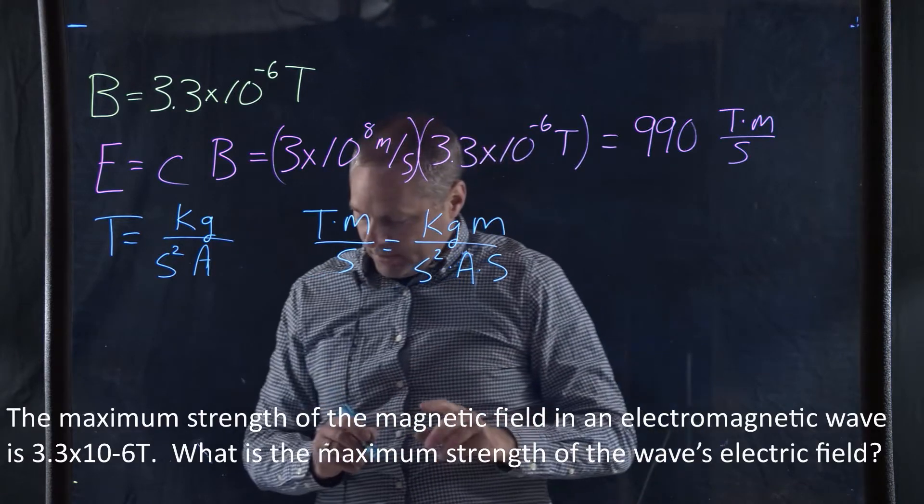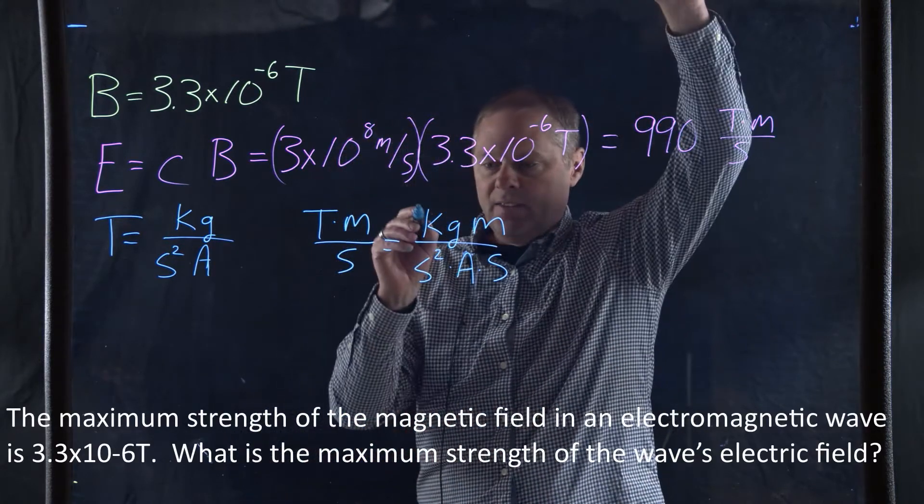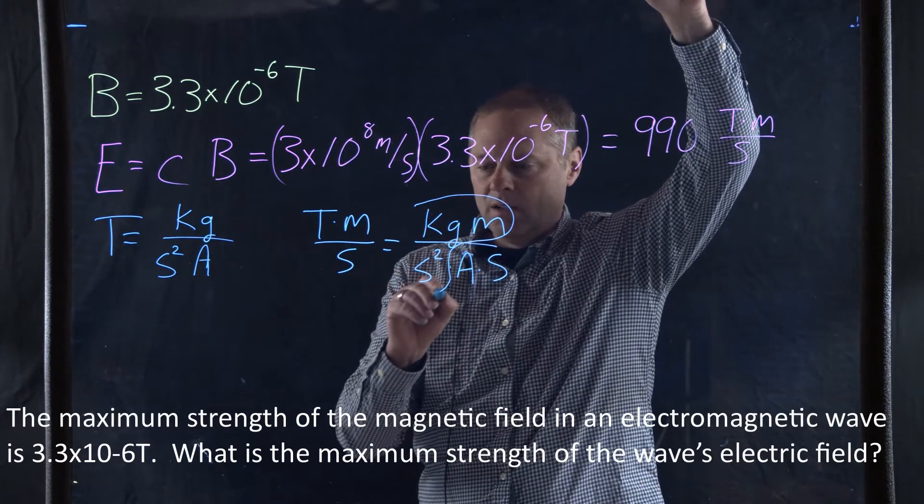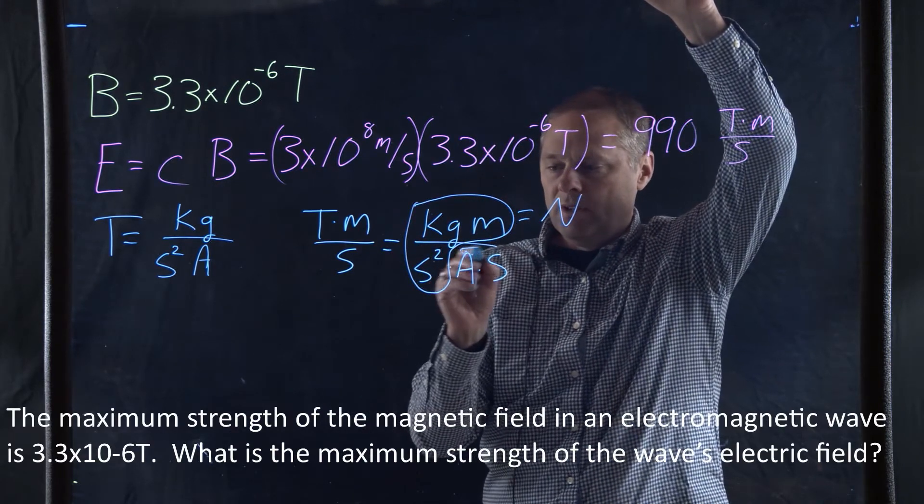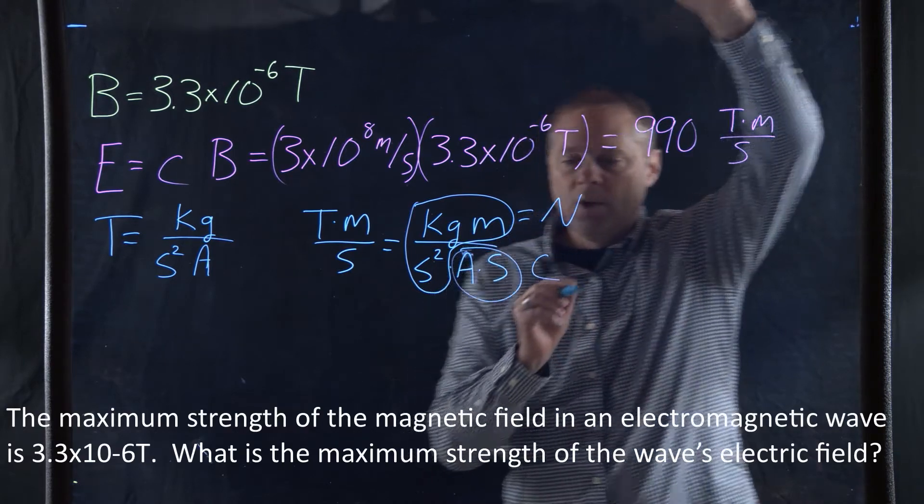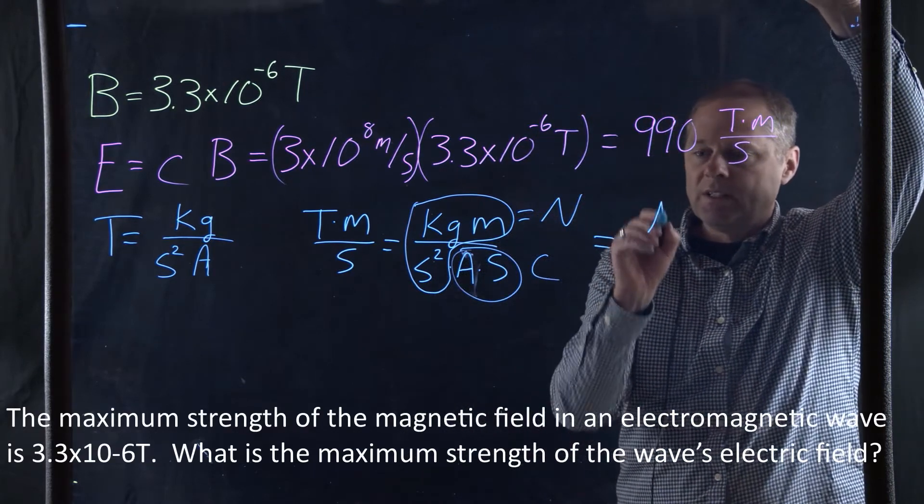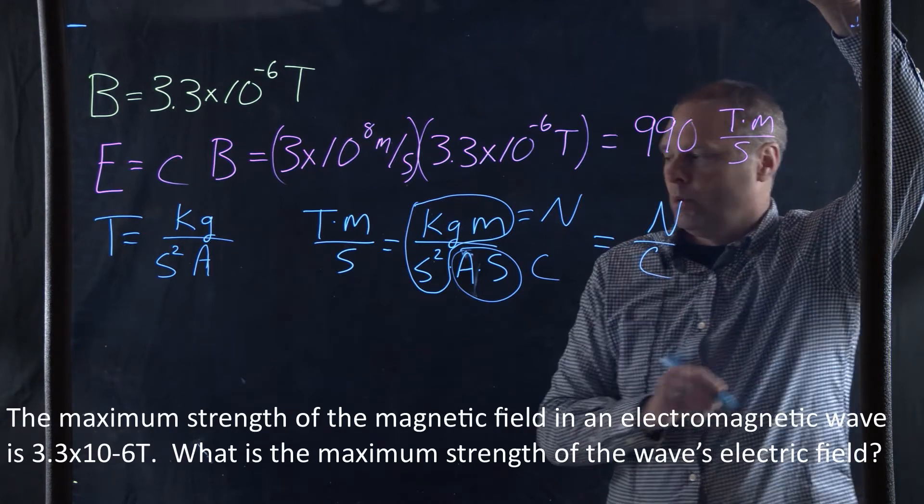Now, what we can notice is that this is a Newton. This is going to be a Coulomb. So the units we get for this is a Newton per Coulomb.